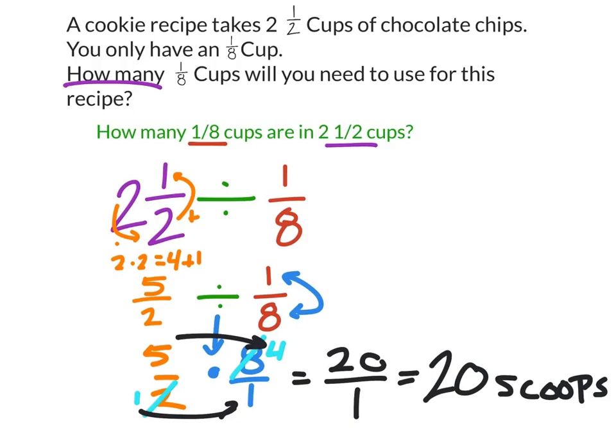So it looks like it would be 20 scoops in order to make two and a half cups from an eighth cup. Now you could check this as well. Eight scoops would be one full cup, so 16 scoops would be two full cups, and then four scoops, four eighths, would be one full half. So it does check out.